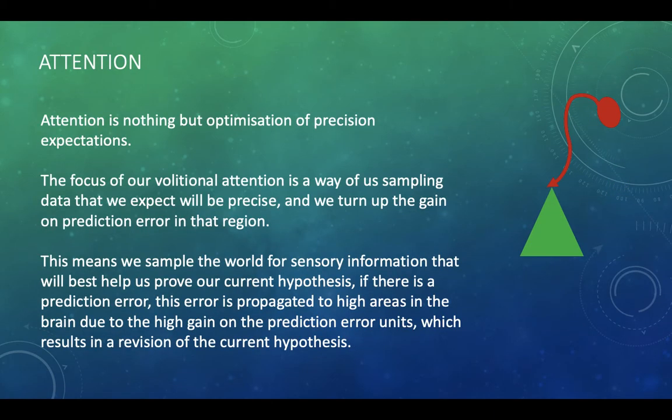So there's one last part for this video, which is on attention. So predictive processing has something important to say about attention. And one of the slogans that's found in both Surfing Uncertainty and The Predictive Mind is attention is nothing but optimisation of precision expectations. It's a little bit wordy as a slogan, but what it means is that the focus of our volitional attention is a way of us sampling data that we expect will be precise. And in doing so, we turn up the gain on the prediction error units in that region.